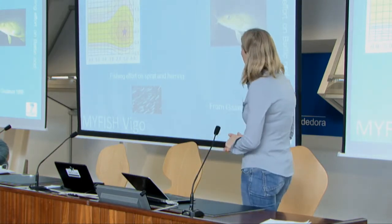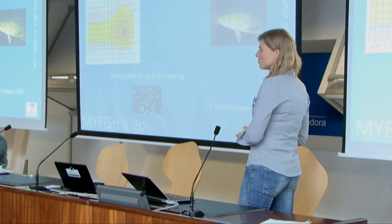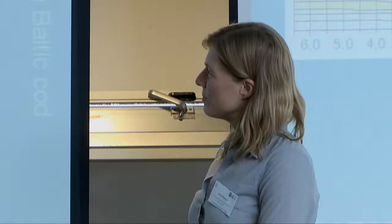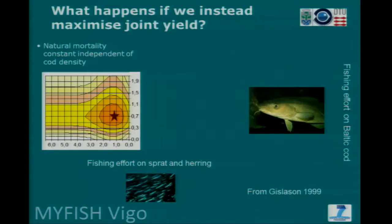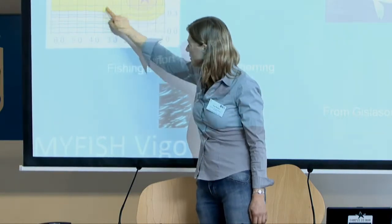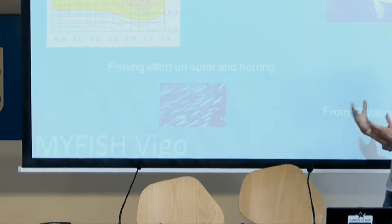I also have a deterministic version — we did do both, but this one shows the main points. It's from 1991, so it's more than 30 years old, and Henrik Gisleson did it. It shows the fishing efforts on sprat and herring — the pelagic fishing effort in the Baltic — and up here is the fishing effort on cod. This colored plot shows the yield in tons, specifically the sum of the yields of cod and herring, based on a single-species model. If you pick some constant fishing mortality of cod, your yield of pelagics will increase and then decrease again, but there is no correlation between the two. They basically do not affect each other.